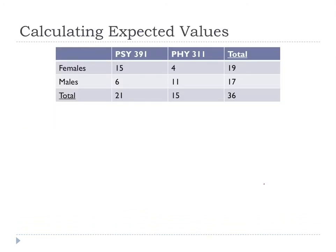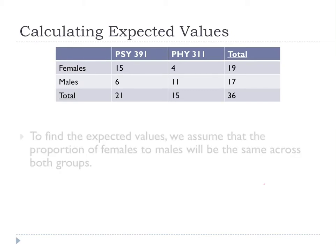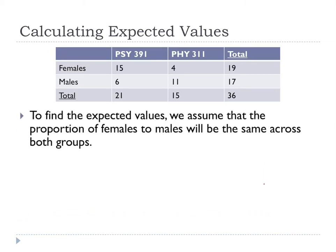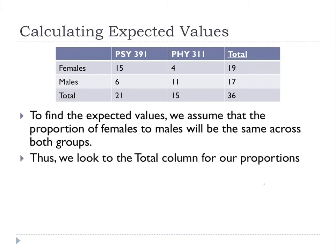Let's talk about calculating expected values. To find the expected values, what we assume is that the proportion of females to males is going to be the same across both groups. In other words, our expected values are the null hypothesis — that the female-to-male ratio is going to be the same no matter what. So for this example, we'll look to our total column for our proportions.